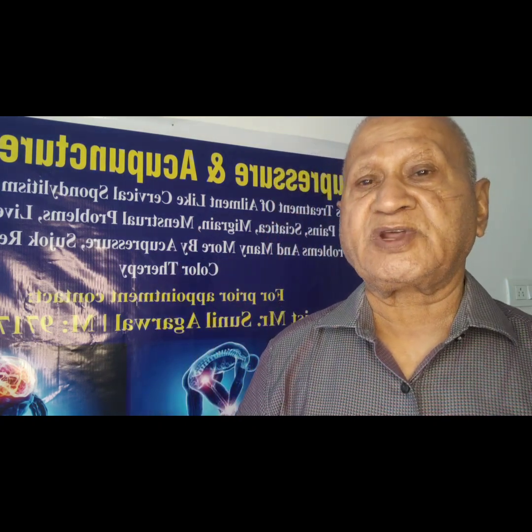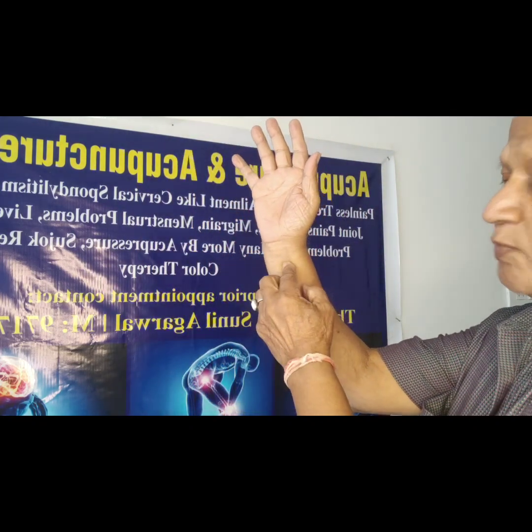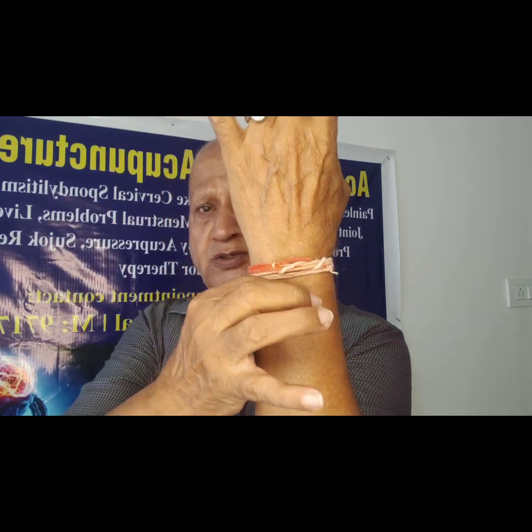The first point is Pericardium 6 — P6. This point is located two fingers from the wrist. You hold your thumb on this point and keep two fingers on the back side, and keep pressing from 1 to 3 minutes. Give the pressure with the thumb and also apply pressure on the back side — that is the Pericardium 6 point.